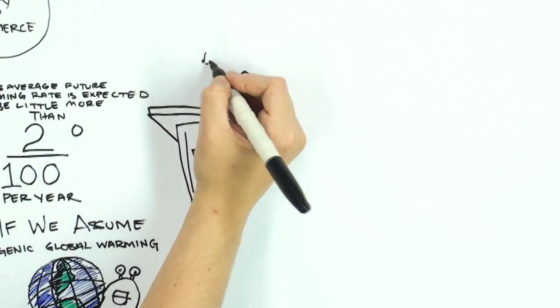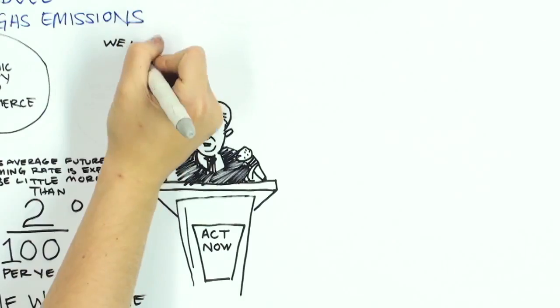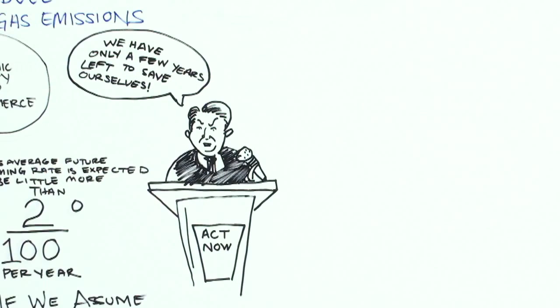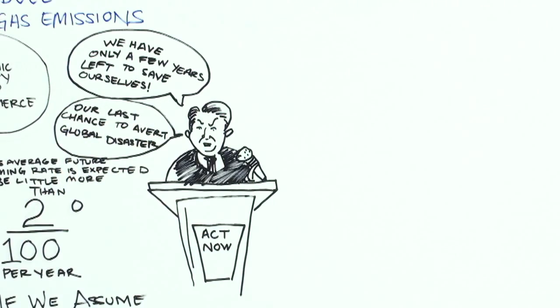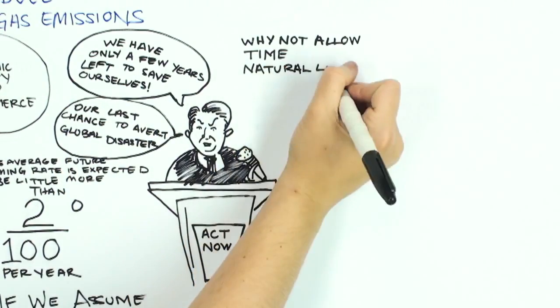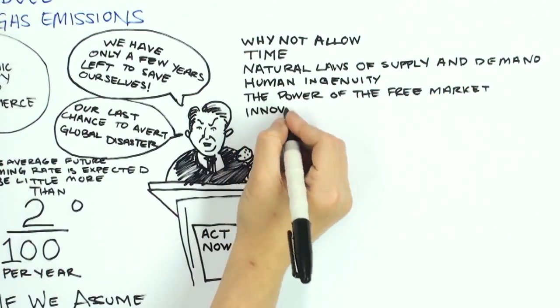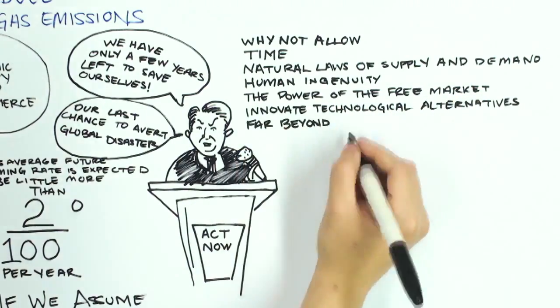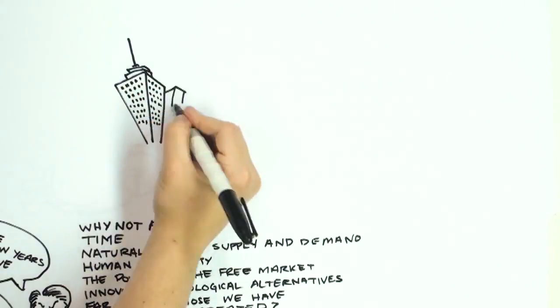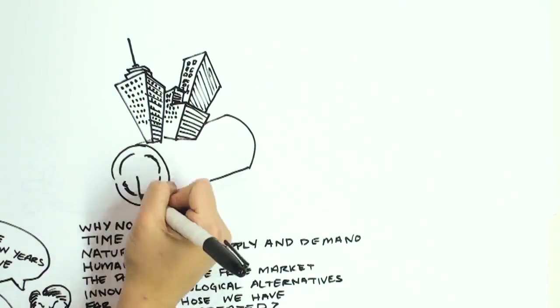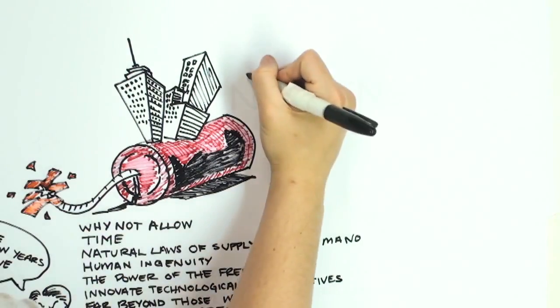So why is it that there is such a strong push to act now? Why do politicians keep claiming we have only a few years left to save ourselves, or that the latest UN meeting is, once again, our last chance to avert global disaster? Instead, why not simply allow time and the efficient forces of supply and demand, human ingenuity, and the power of the free market to innovate technological alternatives, far beyond those we have currently created? And if it turns out that the climate system is, in fact, robust and insensitive, then destroying our engine of wealth creation and reducing civilization back to its pre-industrial roots will have been for nothing.